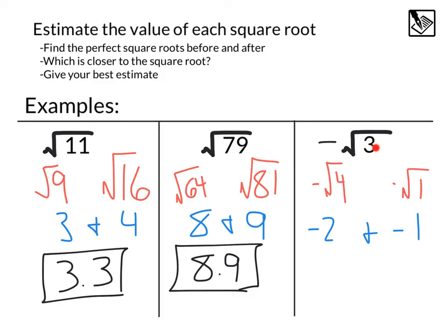One space away from 4 and two spaces away from 1. So we're going to want to make that closer to the negative 2.